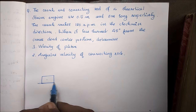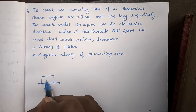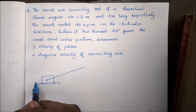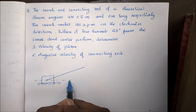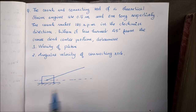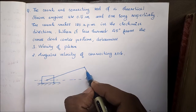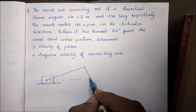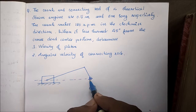This is the slider and the piston. This is the connecting rod. This is the line of action of the piston. This is the crank and the crankshaft.